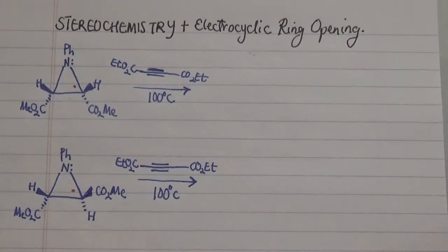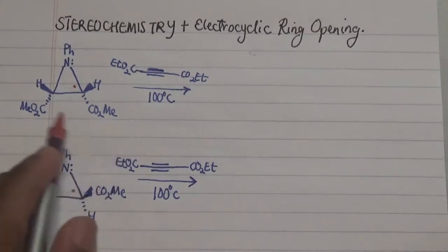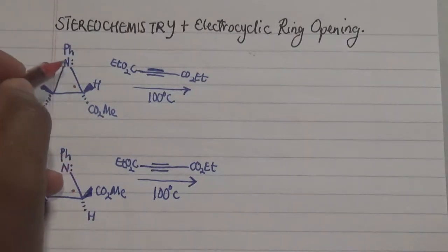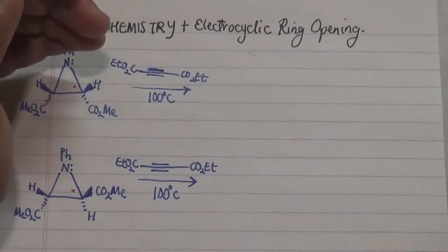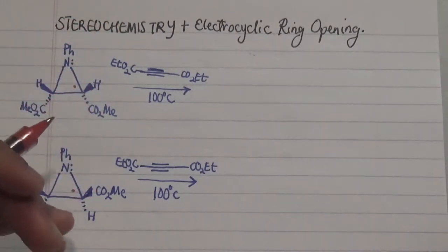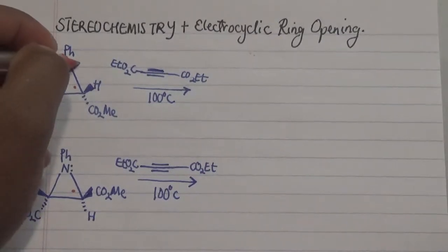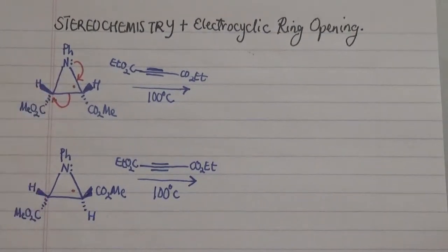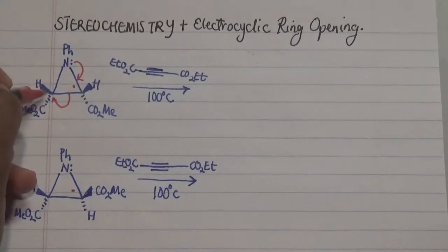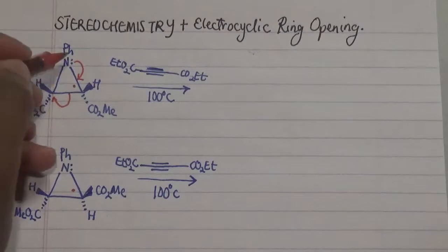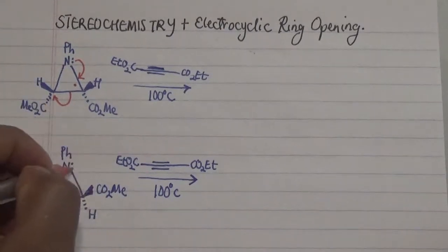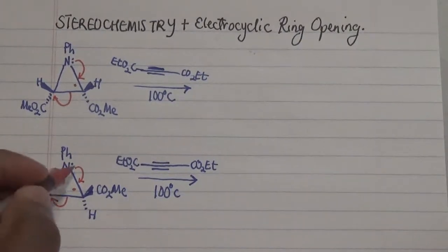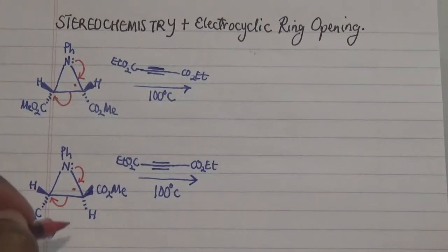Next, we have electron-withdrawing groups here and also electron-withdrawing groups on the other side. What happens is there is a particular pool of electrons going from the nitrogen region over to the downside. As a result, electrons move to form a pi bond here and the sigma bond cleaves off to form a lone pair on this particular carbon, thereby generating a negative charge here and a positive charge there. The same thing applies to this region, leading to a negative charge here and a positive charge on the nitrogen.